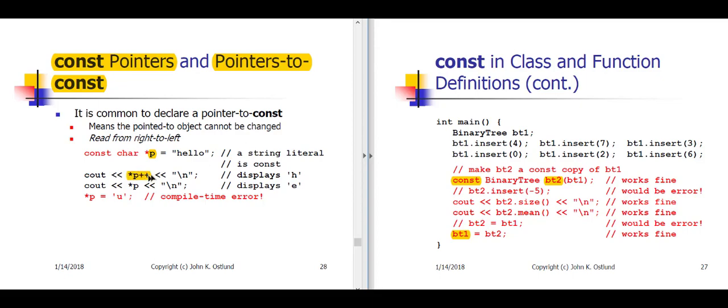Now, it's perfectly fine to change P itself in this case. So, in our first cout statement, we're saying display star P plus plus. Recall that the post increment happens last after everything else. So, what we're actually doing here is we're accessing the H that P is currently pointing to, and the H is what's going to be displayed. And then we're incrementing the pointer P one character forward in memory, so that P is going to be pointing at the little e in the string hello. And consequently, in our second cout statement, when I display star P, that's going to display the little e.